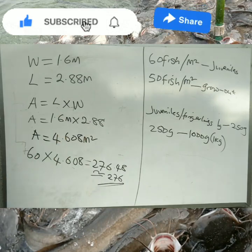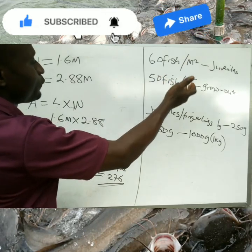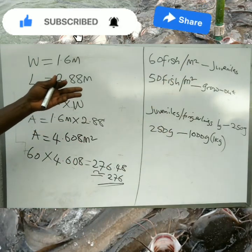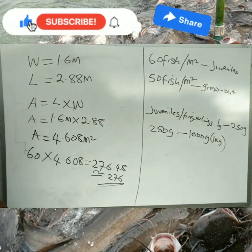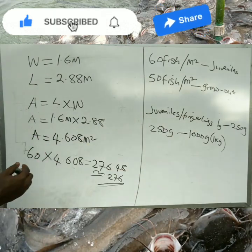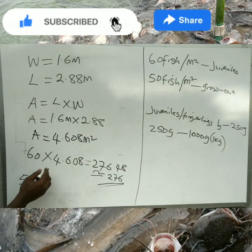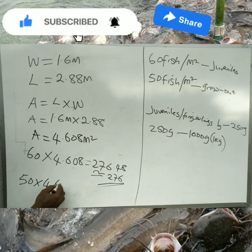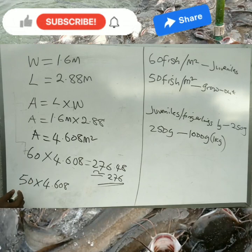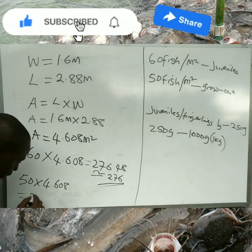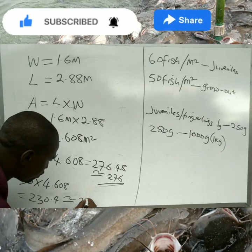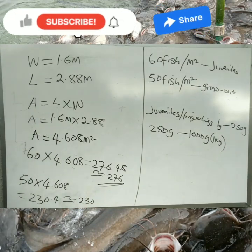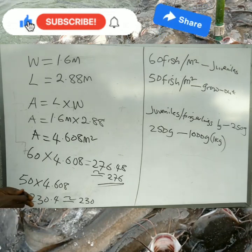Now for a grow-out pond, we stock 50 fish per square meter. If I want to stock fish from 250 grams up to 1 kg, I calculate: 50 multiplied by the area of 4.608, which gives a stocking capacity of 230.4 — approximately 230 fish.